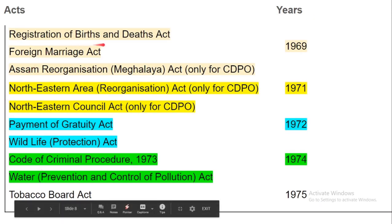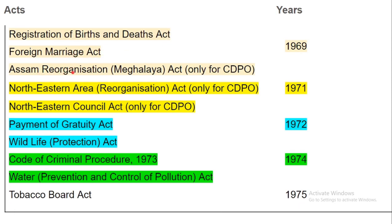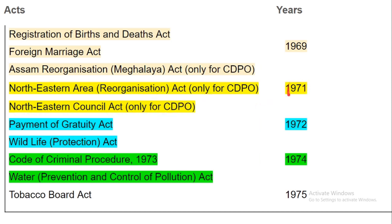Registration of Births and Deaths Act, Foreign Marriage Act and Assam Reorganisation Meghalaya Act — these acts passed in 1969. For those sitting for CDPU exam in Assam, the Assam Reorganisation Act is particularly relevant, though for NET it may not be applicable. Northeastern Area Reorganisation Act and Northeastern Council Act — these two acts passed in 1971.